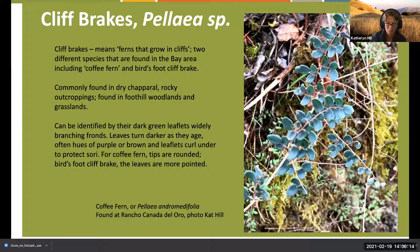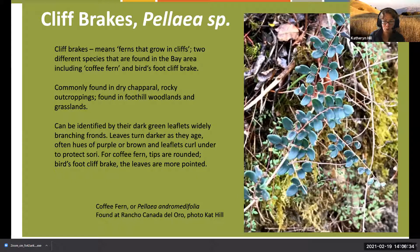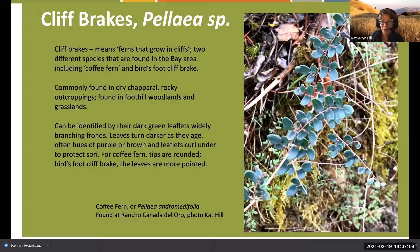The leaf edges curl under to protect the sporangia, similar to the Adiantum species. They have very dark green leaflets and widely branching fronds. They also shed water really well - when you put water on them, the droplets form and the leaves don't actually look wet. Leaves turn darker as they age, and can turn purple, brown, and different shades of rusty red.